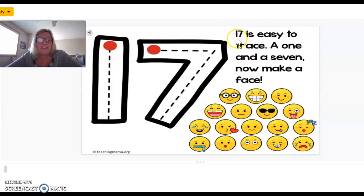The poem for 17 is: 17 is easy to trace. A 1 and a 7 now make a face. All right. So, will you sky write with me when I show you on my screen? It is a 1 and then a 7.